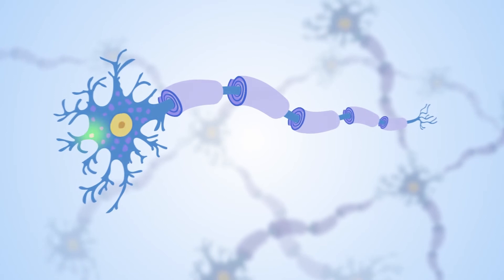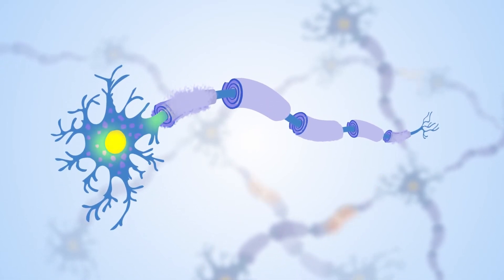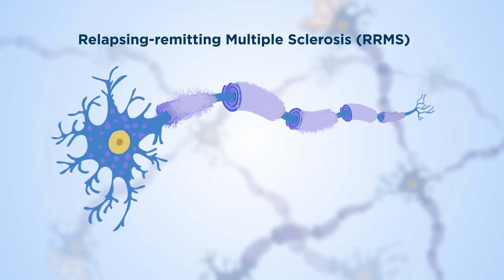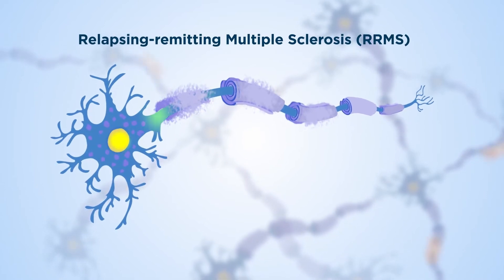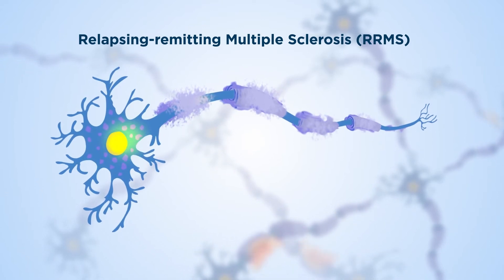Although the body can replace damaged myelin, this process is impaired over time in MS. Disease-modifying therapies are the current standard of care and can decrease the frequency of relapses by targeting the immune system.